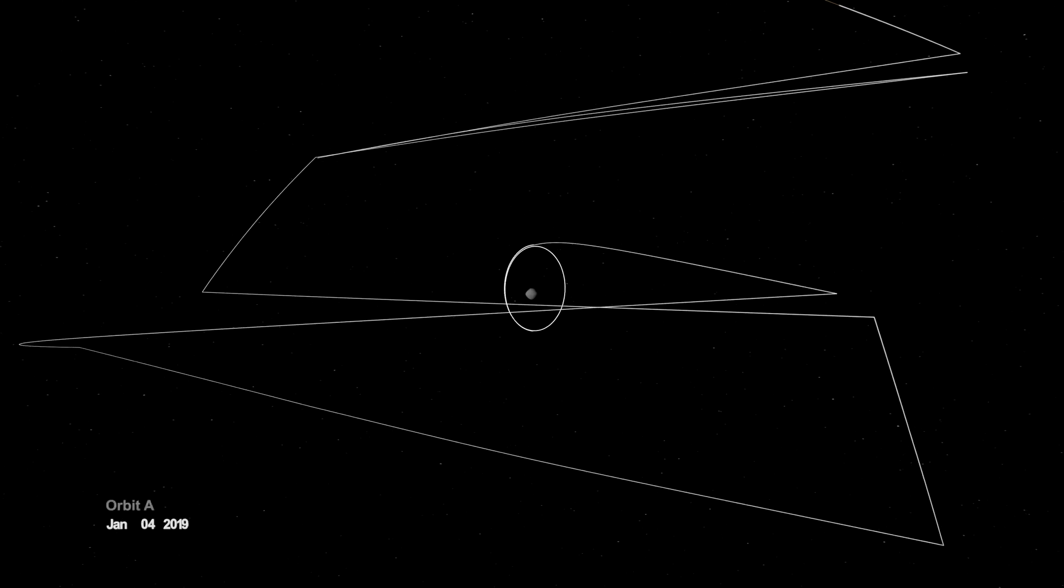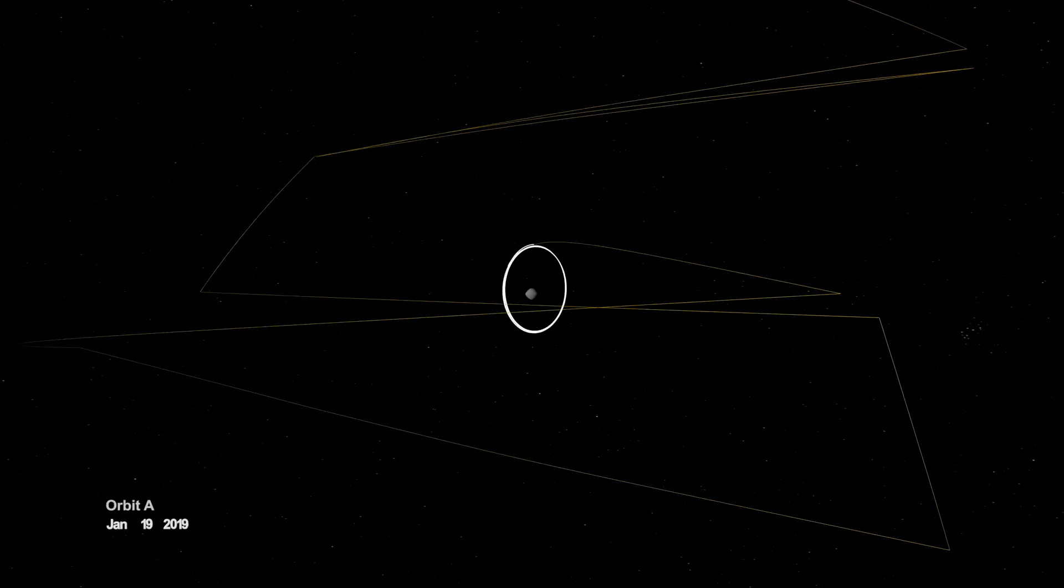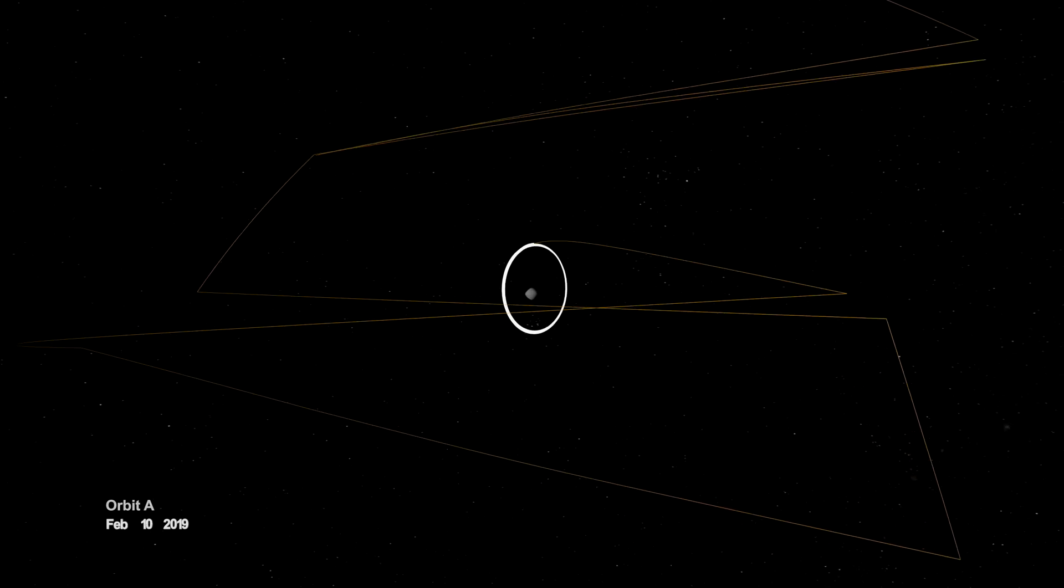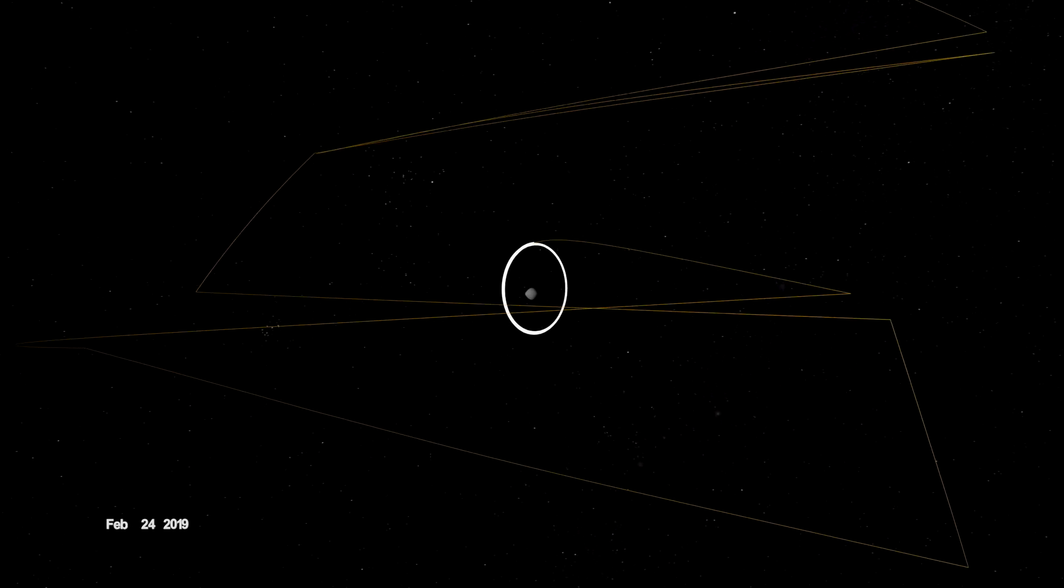On New Year's Eve, OSIRIS-REx was captured into orbit by Bennu's minuscule gravity, making it the smallest world ever to be orbited by a spacecraft.